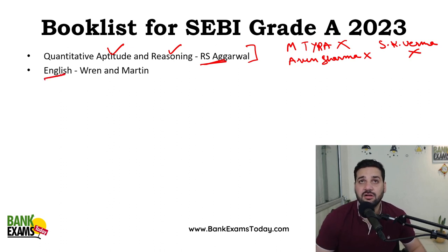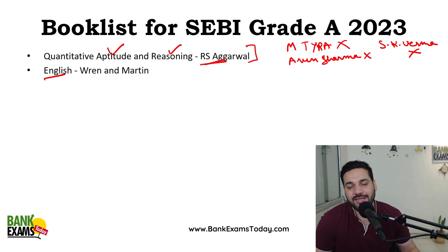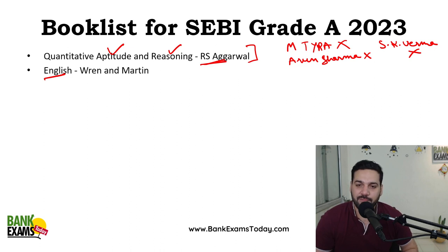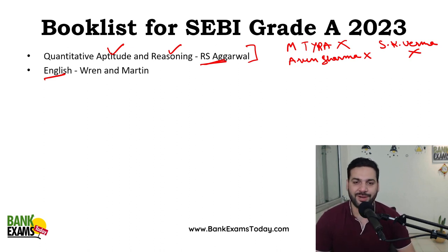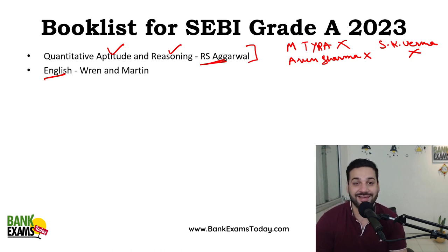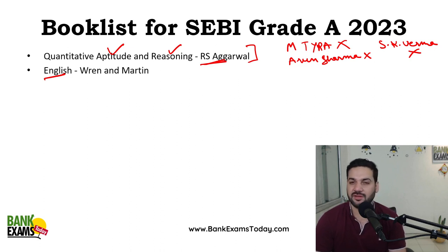For English language, generally I would say you do not need any book. If your English is already good, if you are able to read and comprehend a paragraph and read The Hindu, and if your grammar is good, then you don't need any book — you just need to practice some questions and you can do that from a test series. But if you feel that you need a grammar book, Wren and Martin's book is a standard book, though it's a lengthy book. If your English is good enough, do not waste your time — no need to buy any book for English language.